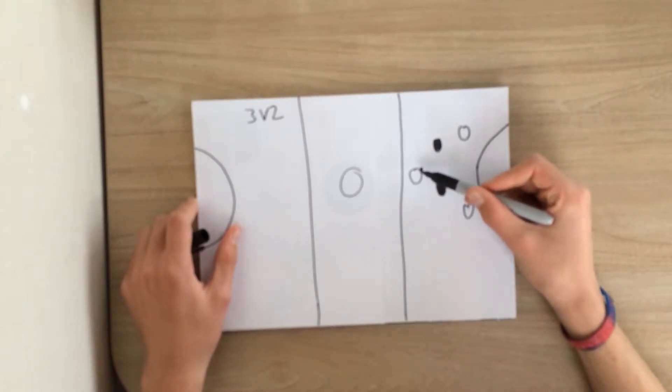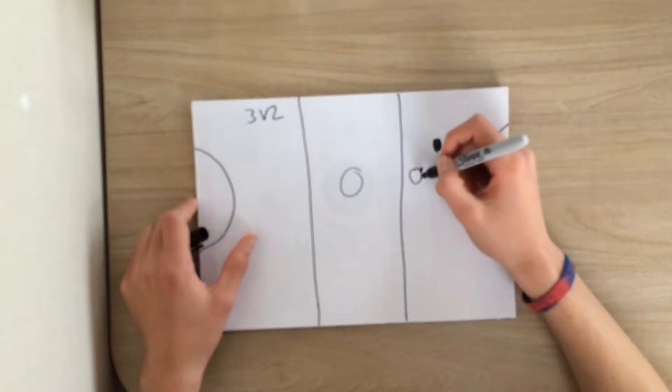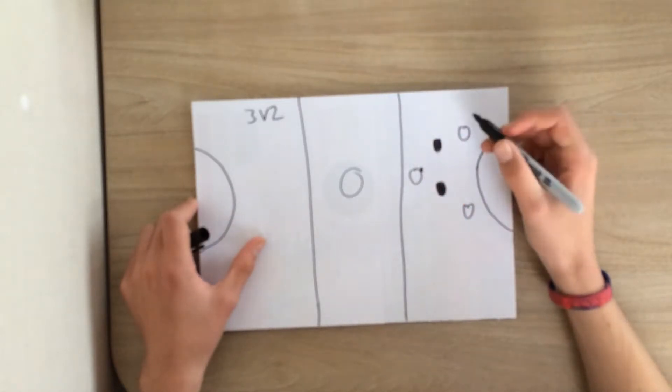Let's say this attacker here is in possession of the netball, and the attacking team are looking to score.